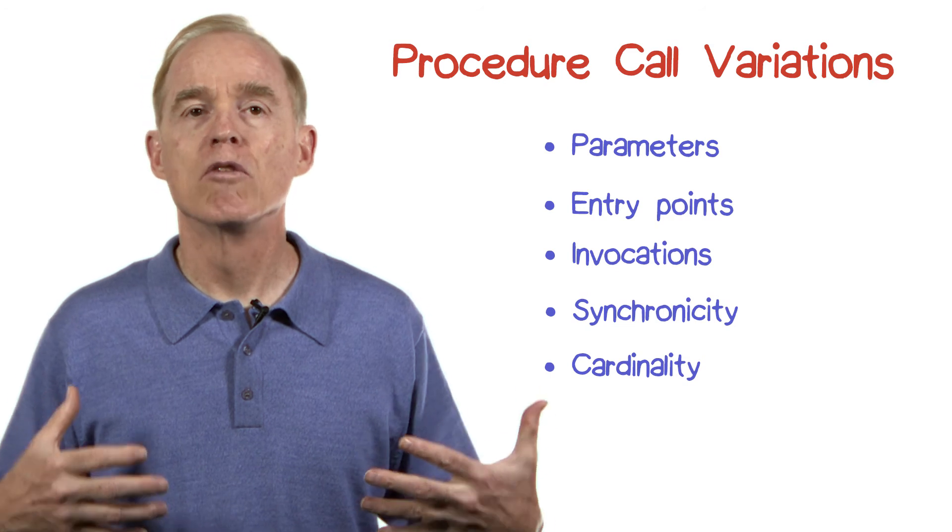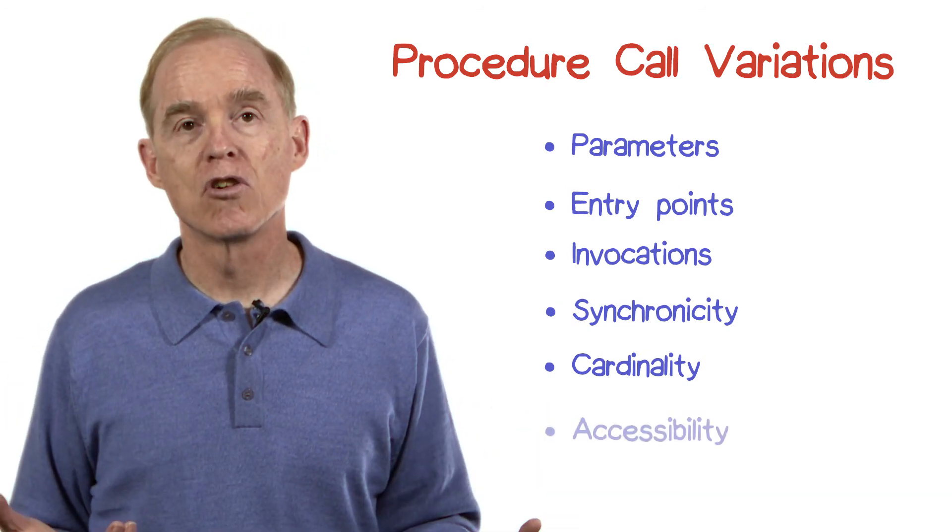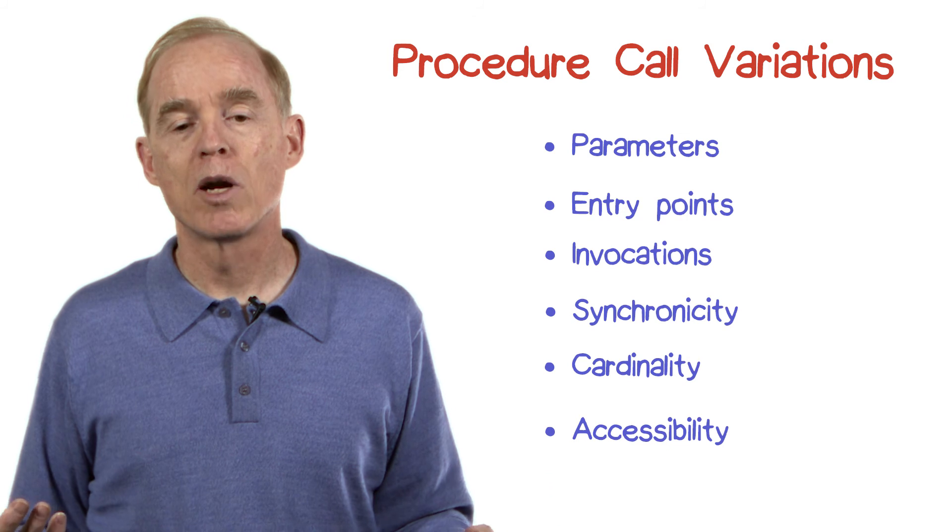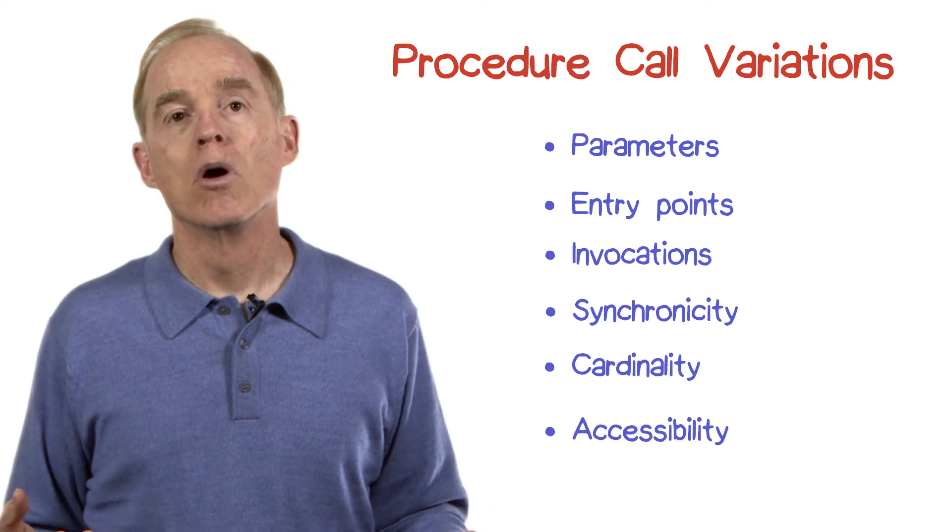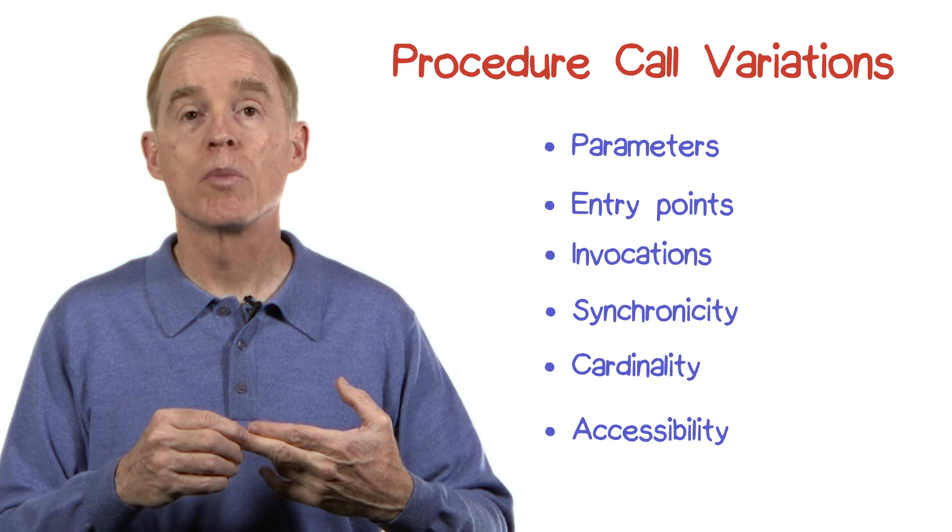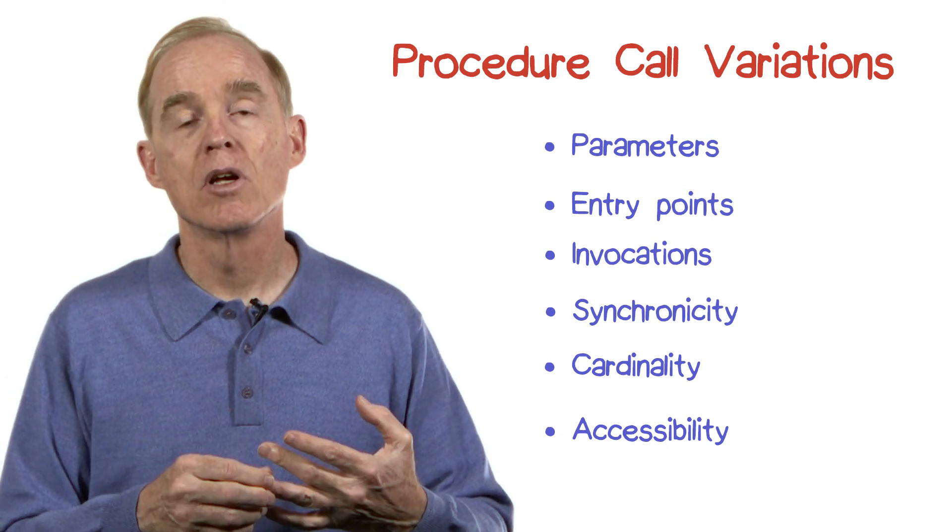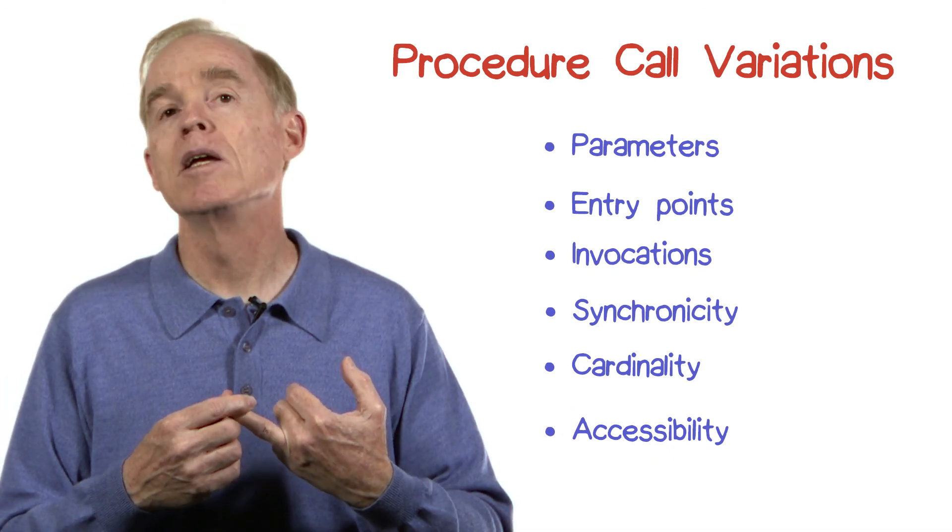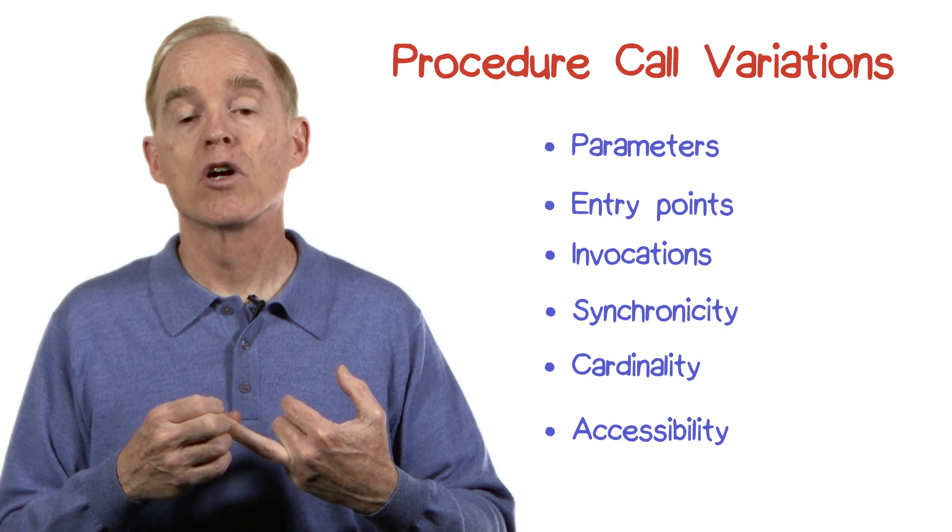And then there's the issue, the variation that is allowed as far as accessibility is concerned. We know, for example, programming languages allow for only private access, that is, within the same class, or protected access to the method from the particular class or its parents or children classes. And then public access, where the caller can be anyplace.